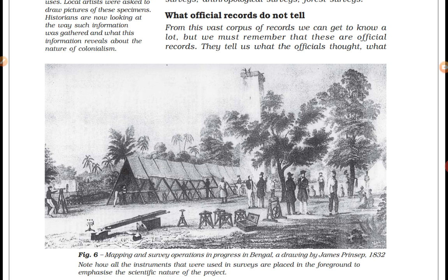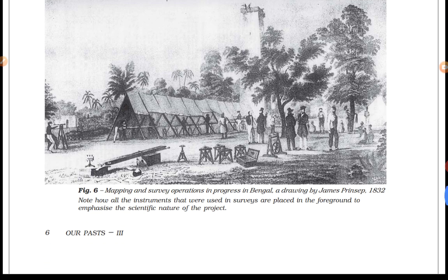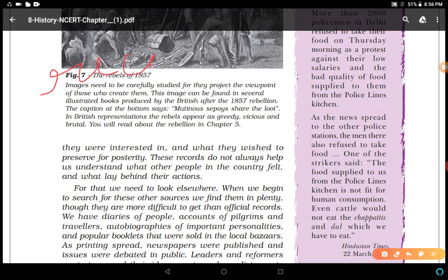In the previous video we discussed about records kept by the British administration. Now we will discuss records that were not kept by officers or administrators — records that were not official. From this vast corpus of records we can learn a lot, but we must remember these are official records. They tell us how the officials thought and what they were interested in and what they wished to preserve for posterity. By studying only this record we cannot know the full reality — it is one-sided.